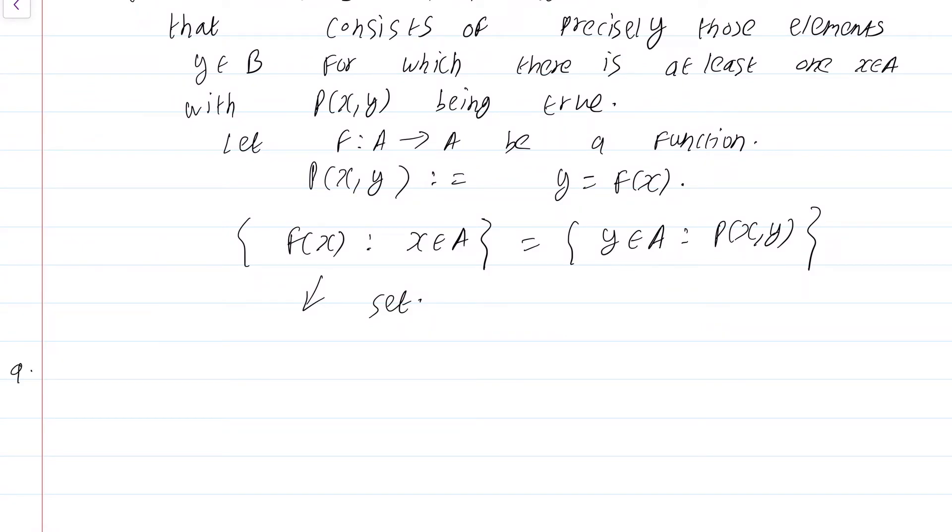Now, the final two axioms, the axiom of regularity. This is there solely to rule out pathologies like what we saw with Russell's paradox. This says every non-empty set A has an element that is disjoint from A. It would be a good idea to pause the video, get some pencil and paper and figure out what this axiom is trying to say.